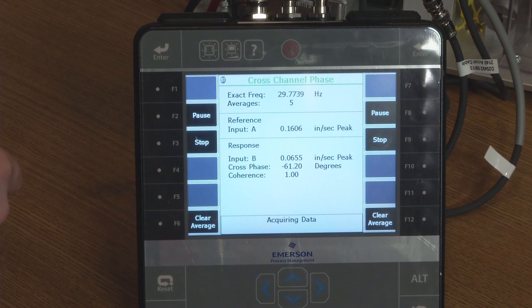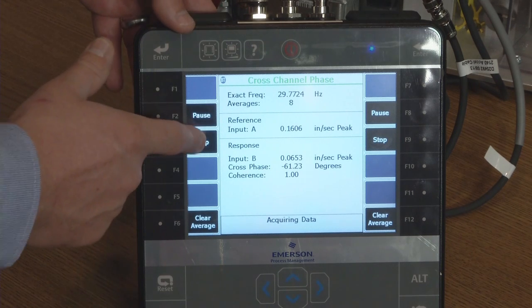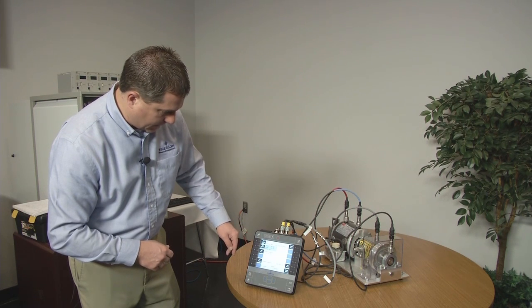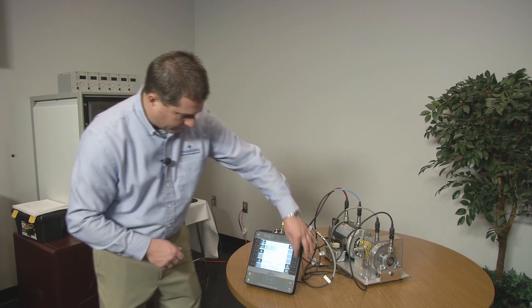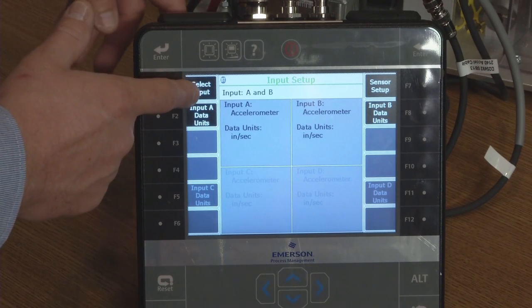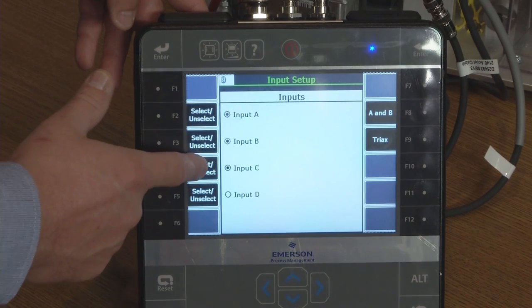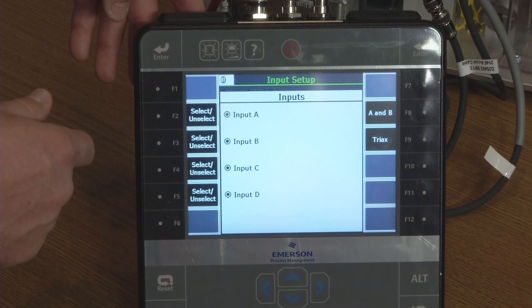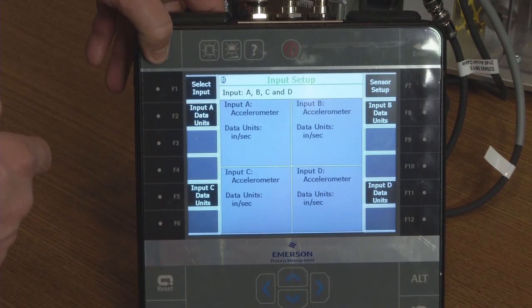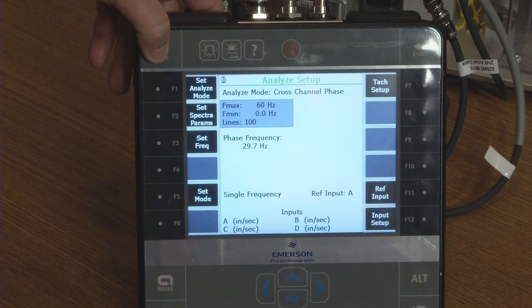I've just got A and B channels turned on. So I'm going to stop this. And I'm going to do the setup here. I'm going to turn on my inputs. Turn on channels C and D. So I've got four channels here. Press Enter. They're all set up for inches per second. And that looks good. And so now let's do the test again here.